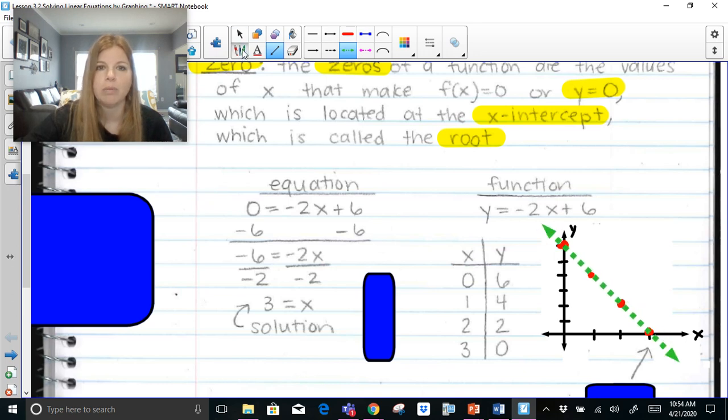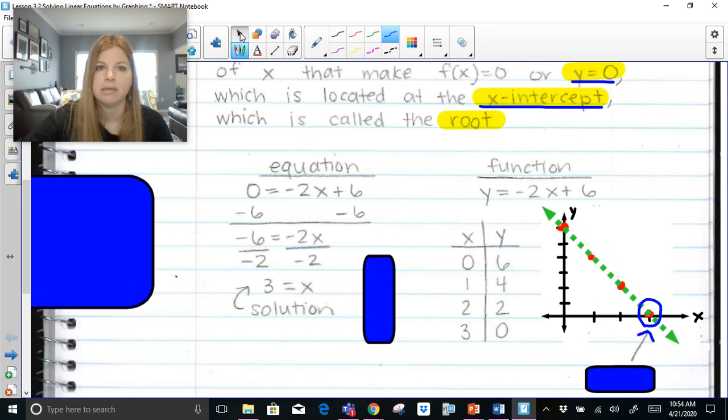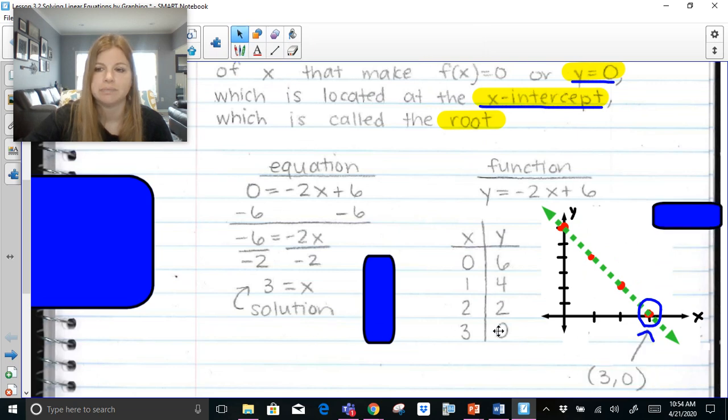And what I want you to notice, and you can see I have an arrow pointing to it, is look at this. The x-intercept, which is where y is equal to 0. Look at that number. That number there is at 3. The x-intercept is 3, 0. Look at our solution. x = 3. When y = 0, our x = 3.